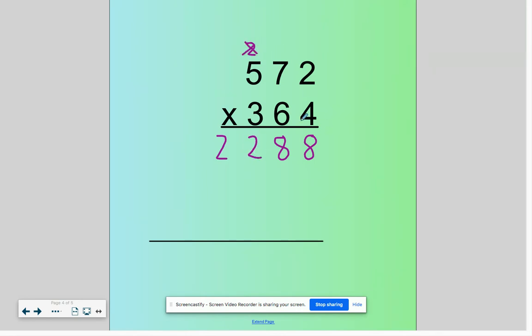Kill the 2, kill the 4. 6 times 7 is 42, plus 1 is 43. 6 times 5 is 30, plus 4 is 34.